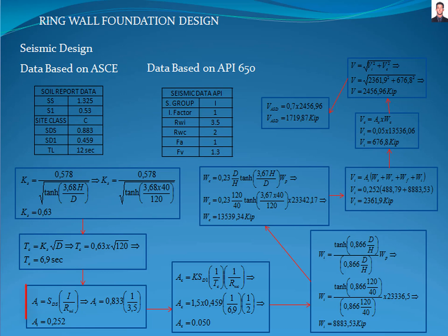Now, we calculate the impulsive spectral acceleration parameter AI with the equation E4.6.1-1 resulting in 0.252.